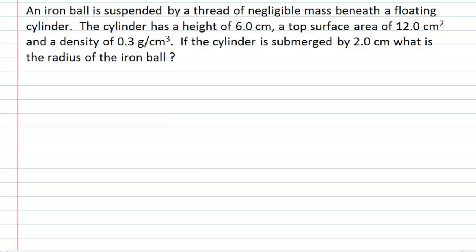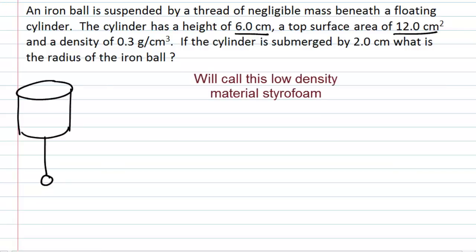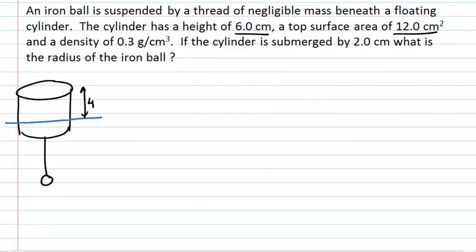An iron ball is suspended by a thread of negligible mass beneath a floating cylinder. I always find it helpful to draw a diagram describing the situation and put all the important information on it. The cylinder has a height of 6 centimetres, surface area 12 centimetres squared, and a given density. It is submerged 2 centimetres below the water and 4 centimetres above, with the cross-sectional area of 12 centimetres squared. The question asks: what is the radius of the iron ball?